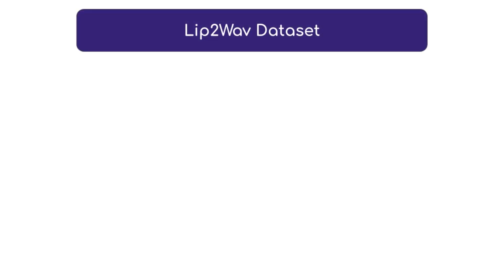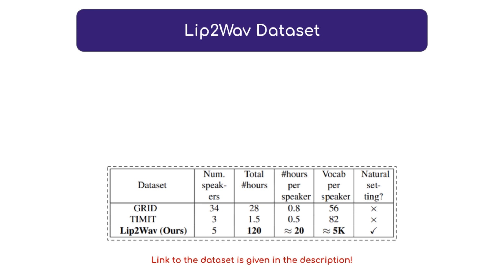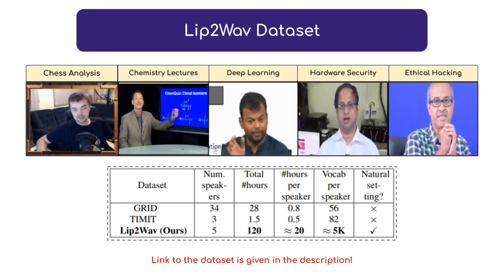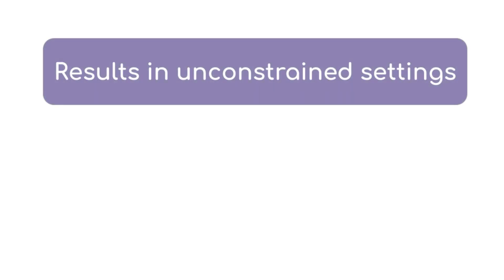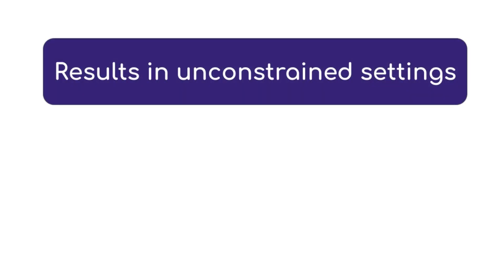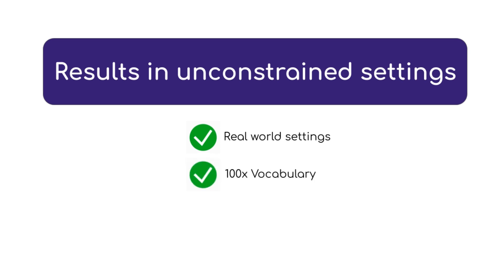For the task of speech generation in real-world settings, we collect a dataset using videos publicly available on YouTube. Our dataset consists of lecture videos on various topics and chess commentary videos. We train our speaker-specific model for each of these five speakers separately. We will now show that these models give superior performance in unconstrained real-world settings, with 100x larger vocabulary and significant head motion.